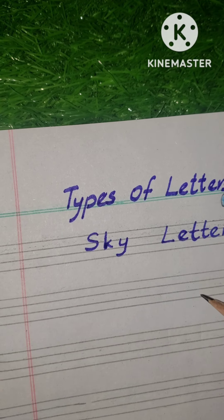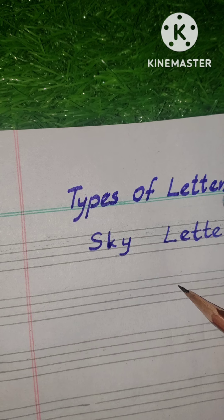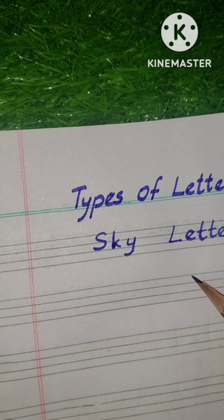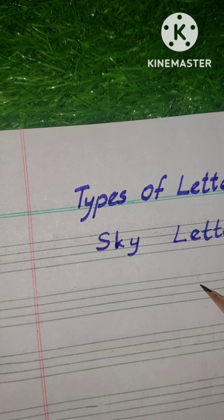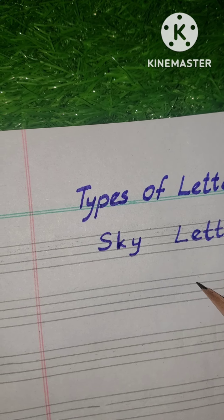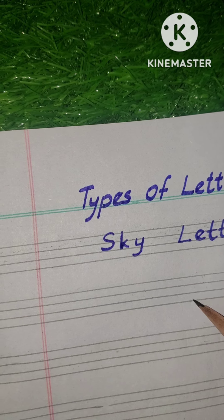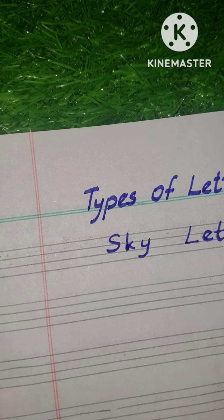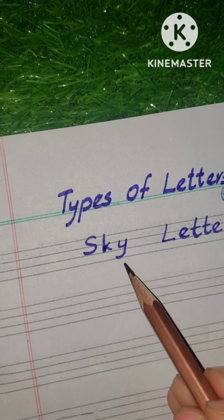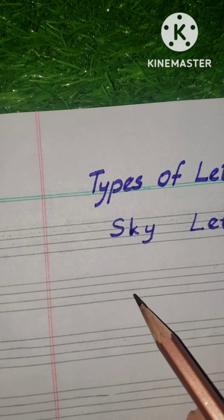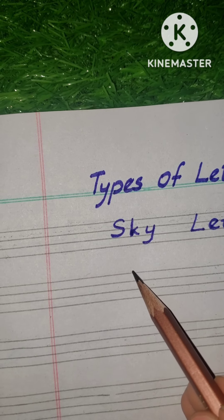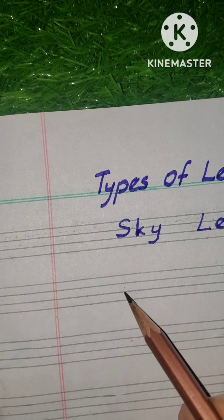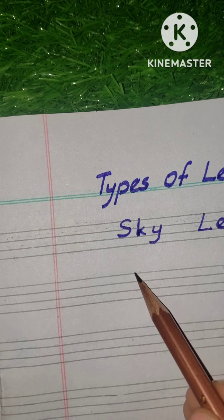In an English page we have four lines: one, two, three, four. The top line is called the top line, and the two middle lines are called the middle lines. Sky letters, as the name specifies, touch the top line.